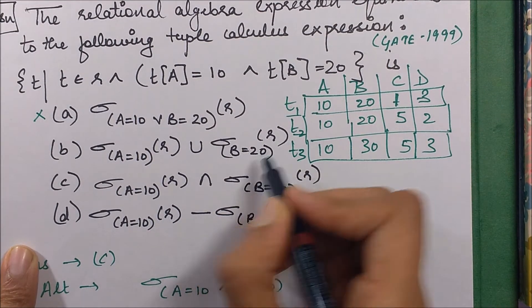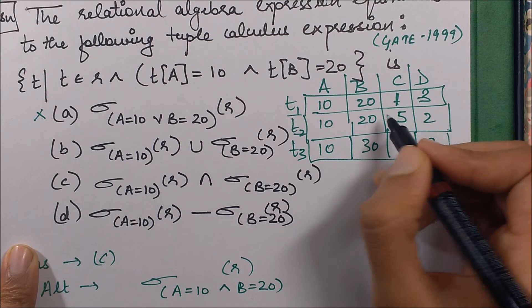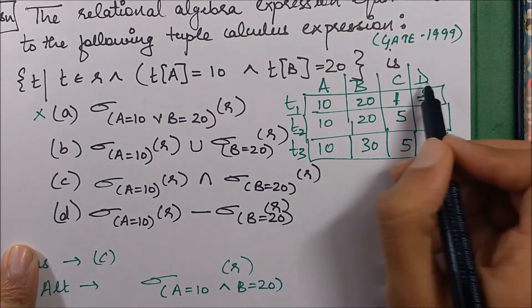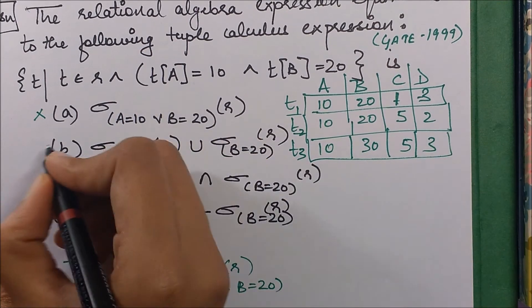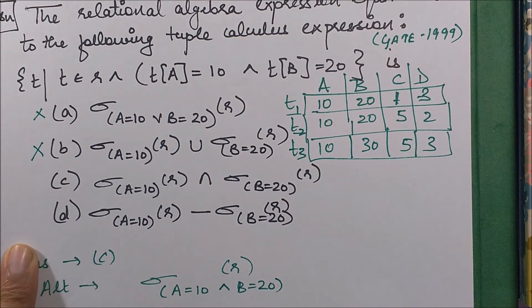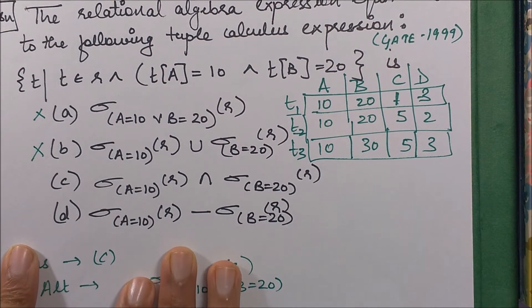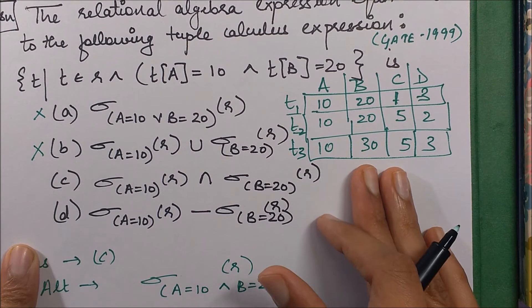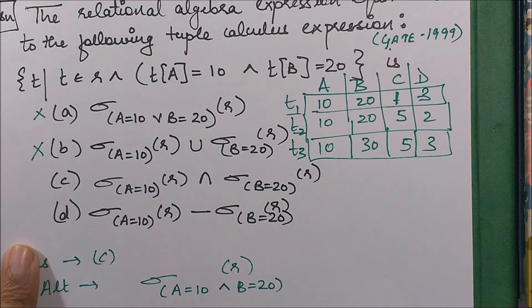So we have the list of all these three tuples, but we actually required only these two. So this is also not a possible answer. When attempting these kinds of questions, it always helps to take an example, build it yourself, and check whether what you want is actually coming.